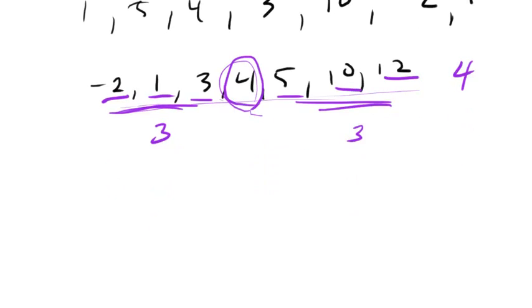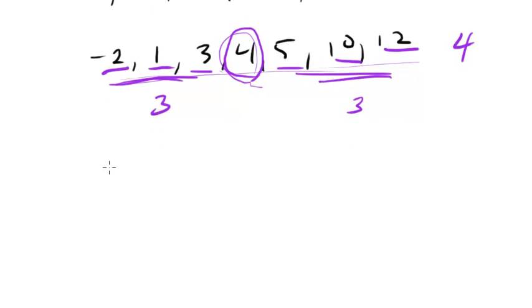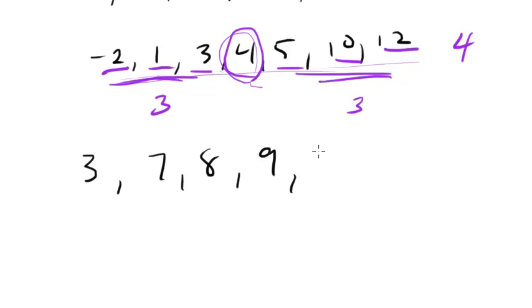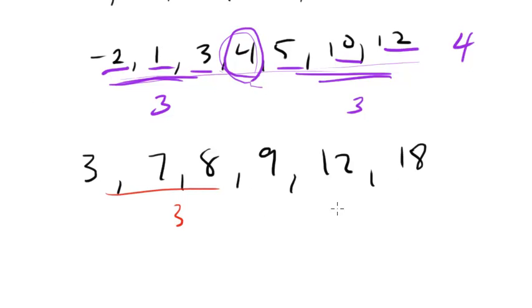Now what happens if you don't have an odd number of elements? Let's say your list, when put in order, is 3, 7, 8, 9, 12, 18, and we want to know the median. We've got 6 numbers, so there's no single middle number — there's 3 on each side, or 2 on each side with no middle.